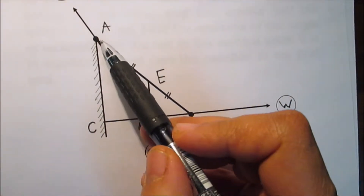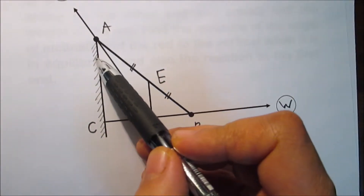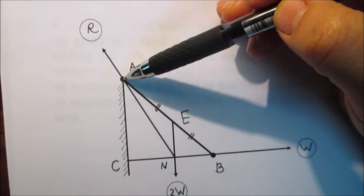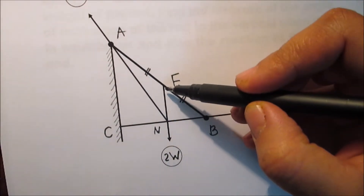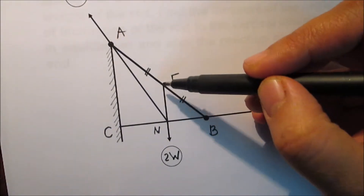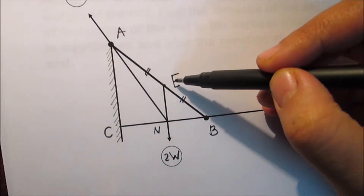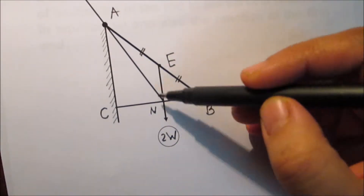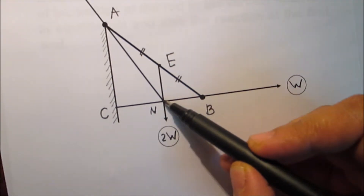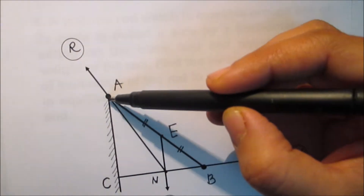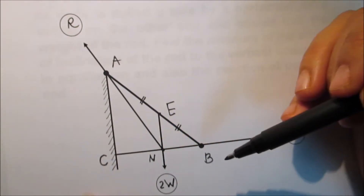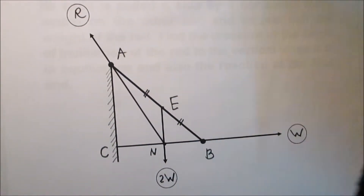We need to find the angle of inclination of the rod to the vertical — this angle — and also the reaction at the first end of the rod. The weight of the rod is 2w, a vertical force passing through the midpoint E of the rod. Since the horizontal force and the vertical weight meet at point N, the reaction at the first end must also pass through N, the meeting point of the other two forces.